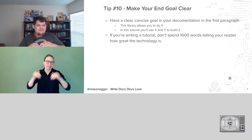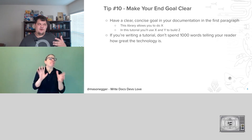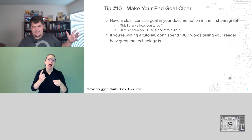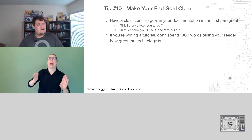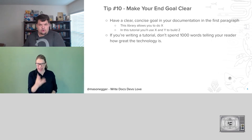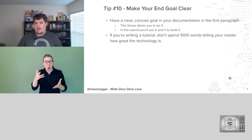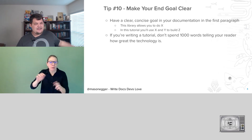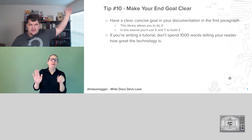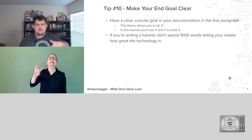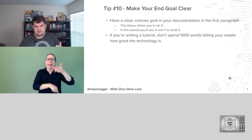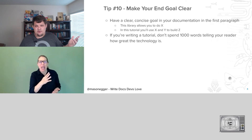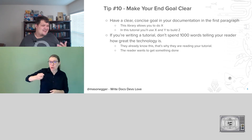If you're writing a tutorial, don't spend a thousand words telling your reader how great the technology is. Don't go on a four-paragraph tangent on the history of this technology. The user probably doesn't care — they're already at your tutorial, they already know how great it is. It's like those recipes online that tell you the entire backstory of someone's family lineage all the way back to the 1400s. What do most people do? We all scroll through that and get to the actual instructions. People just want to get stuff done. That's a good point for a blog post, not for a tutorial.